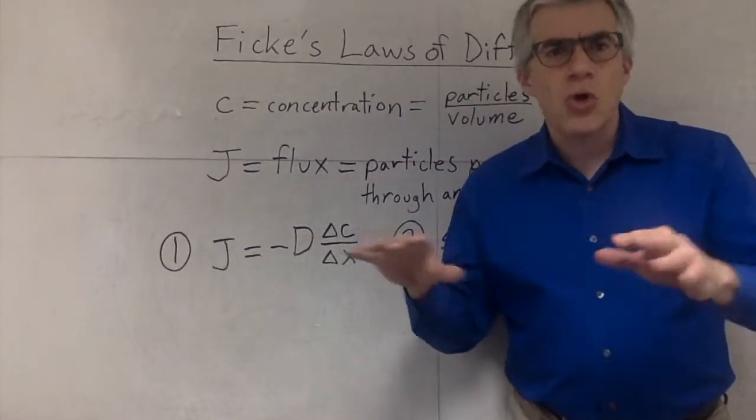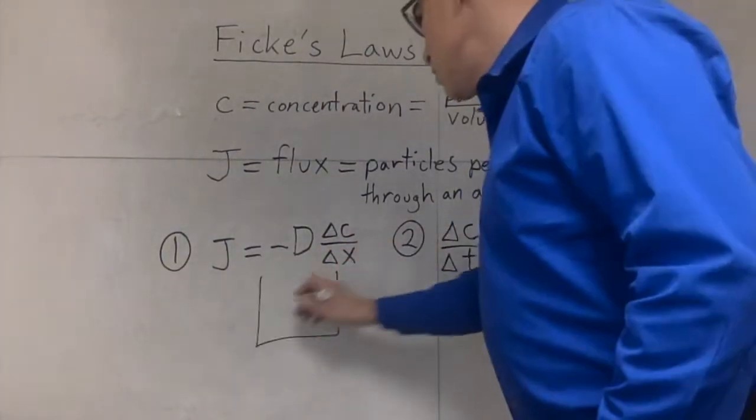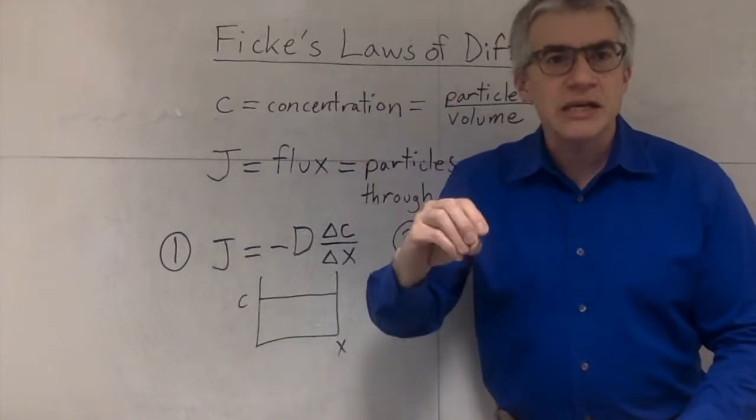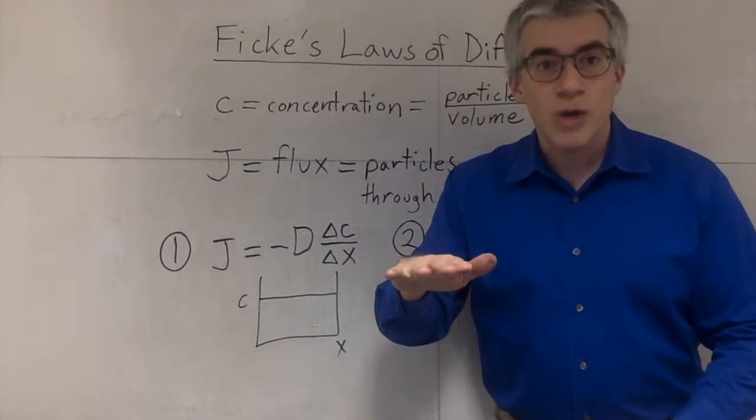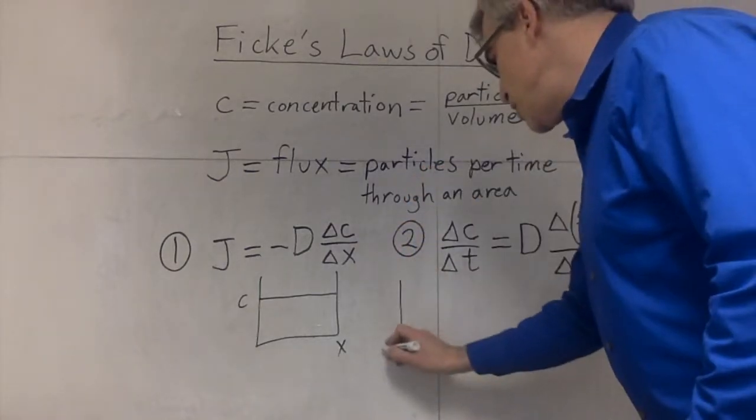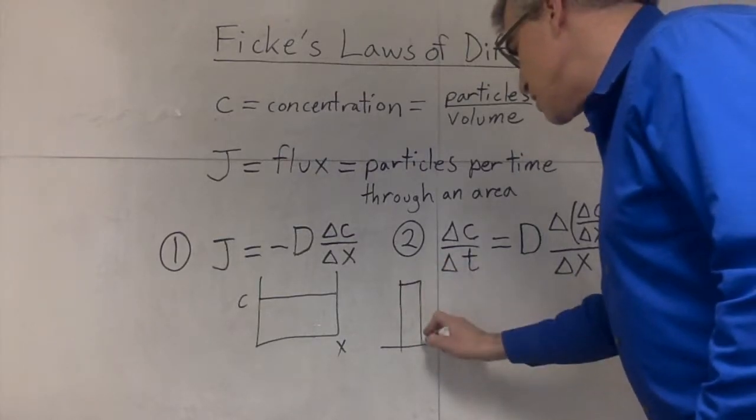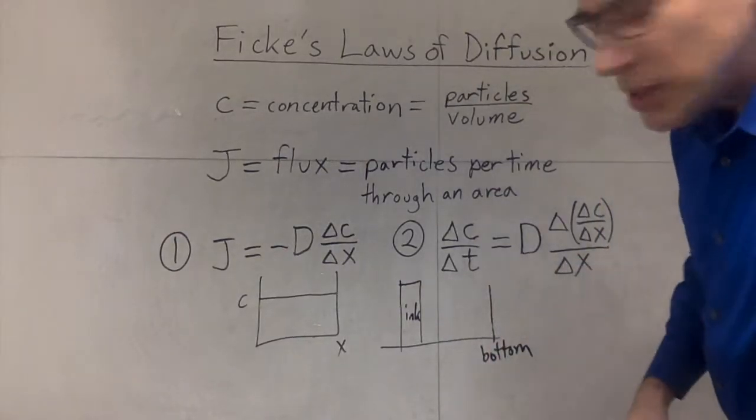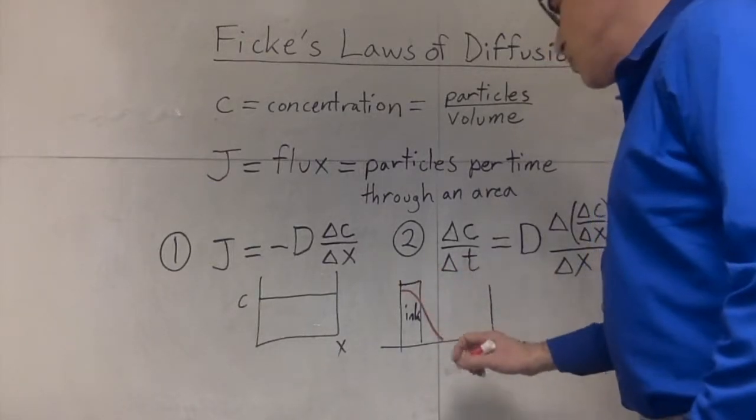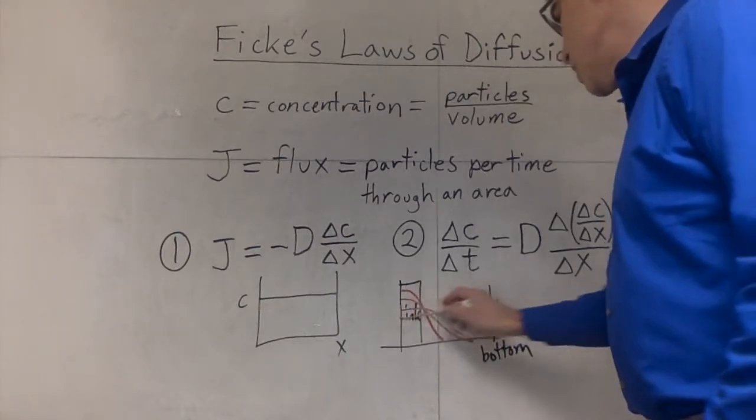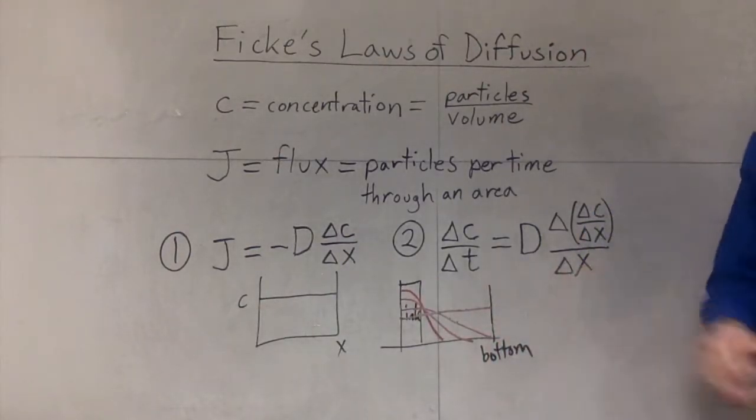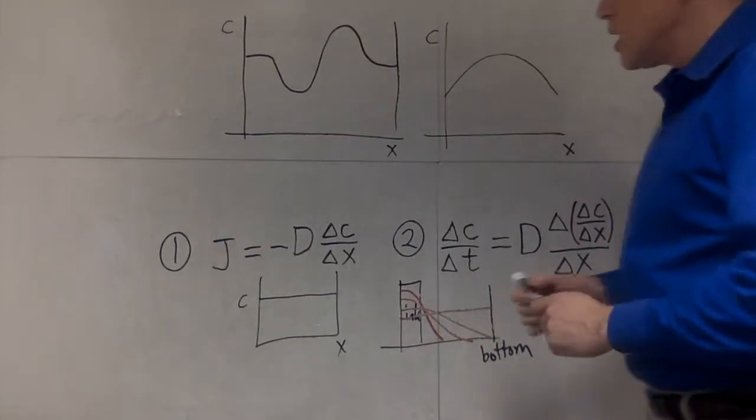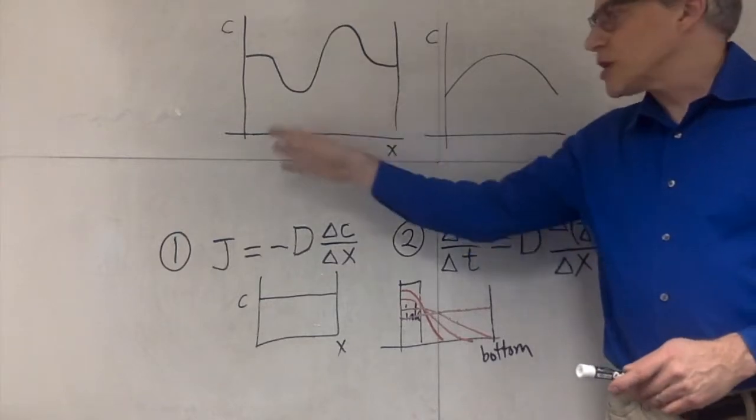Well, if you had something that was already thoroughly mixed, its concentration everywhere would basically look like that. It'd just be uniformly mixed. But suppose you started out by putting a lot of ink, say, in the top of a glass of water, and you were watching it spread slowly downward. Now, if the left edge represents the top, we could say we started out with a big concentration of ink, and over here is the bottom of the glass. Over time, this is going to change. It's going to spread out, spread out some more, spread out some more, and eventually become uniform. We're going to try and describe that process.